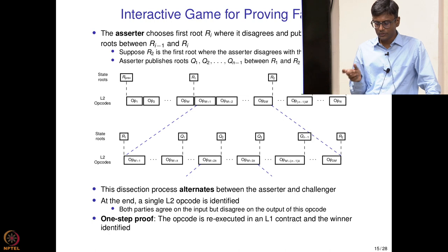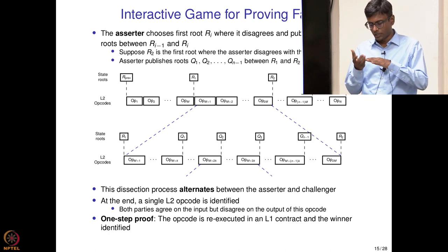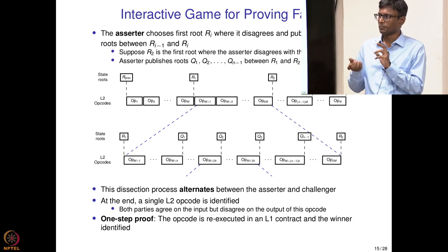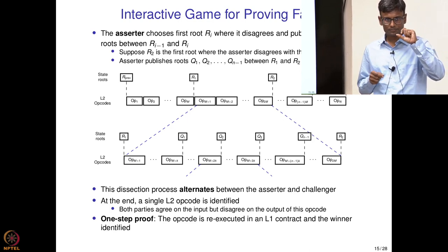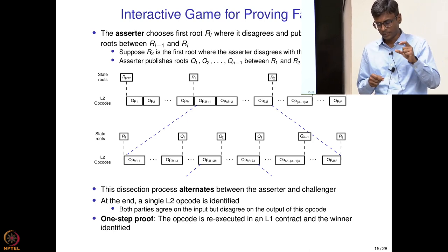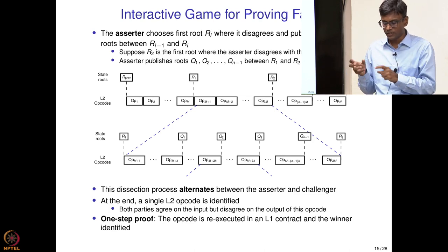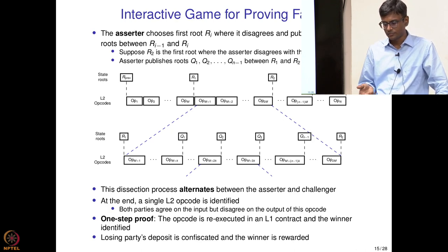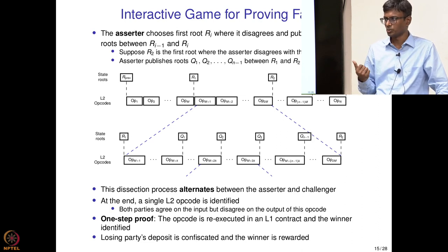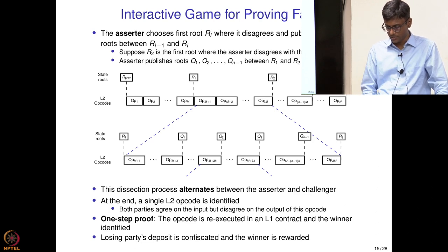The losing party's deposit is confiscated. When a challenger challenges a state root, it also has to put in a deposit, otherwise it has nothing to lose. Whoever is the losing party loses their deposit and the winner is rewarded. The interactive game proceeds: the assertor publishes R_new, the challenger publishes n minus 1 intermediate state roots between R_previous and R_new, the assertor finds the first disagreement point and publishes intermediate state roots, and this keeps going until the one-step proof is reached.